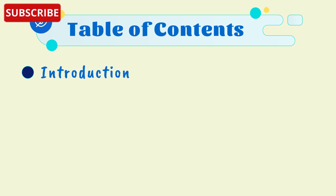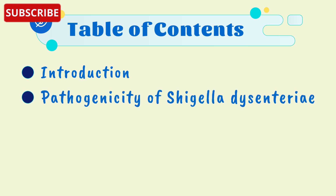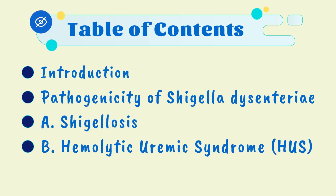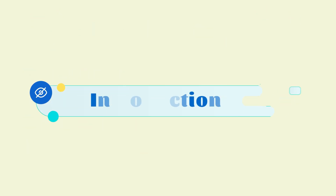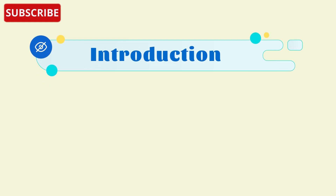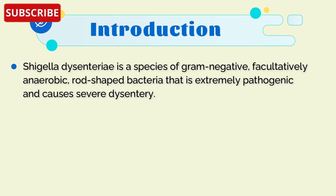First, we will have a brief introduction of Shigella dysenteriae, then we will go through the pathogenicity of Shigella dysenteriae, which includes shigellosis and hemolytic uremic syndrome. Let's first begin with the introduction of Shigella dysenteriae.